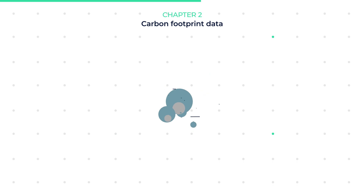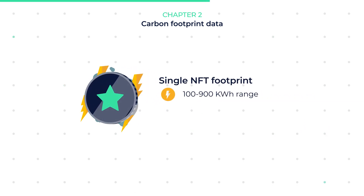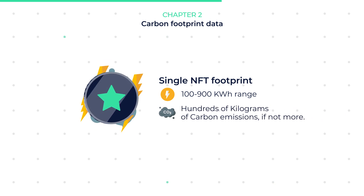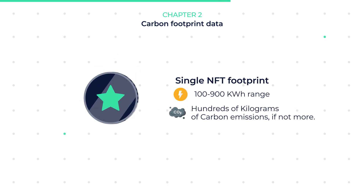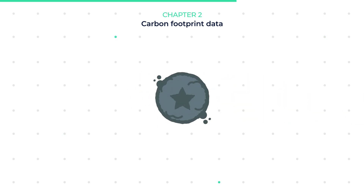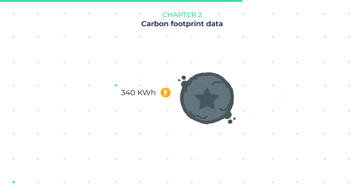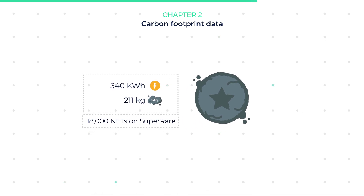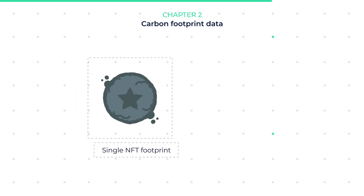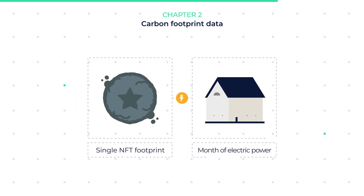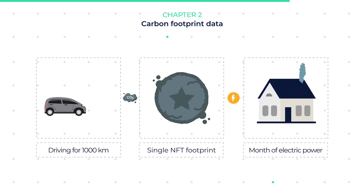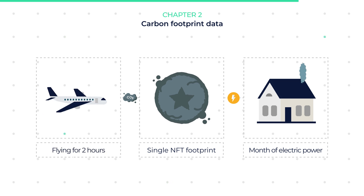This often boosts the footprint of a single NFT into the 100–900 kWh range, as well as hundreds of kilograms of carbon emissions, if not more. In reality, the average NFT has a footprint of roughly 340 kWh or 211 kg of carbon across the 18,000 NFTs on the SuperRare marketplace. A single NFT footprint is similar to a month's worth of total electric power use for a European resident.